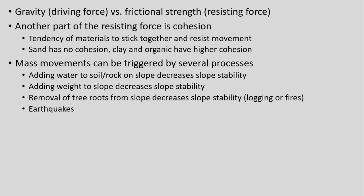There are also other parts that come into play. There's the resisting force of cohesion — more cohesive rock has greater stability. Sand doesn't really have any cohesion, while clay actually has very high cohesion — it's very sticky. More importantly, we want to know what the different processes or triggers of mass movements are. For example, adding water to soil or rock on slopes, especially steeper slopes, usually decreases slope stability and is much more likely to trigger something like a landslide or a big mass movement.